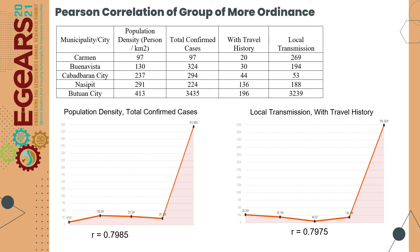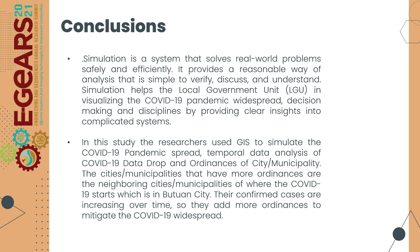Conclusion. Simulation provides a reasonable way of analysis that is simple to verify, discuss, and understand. It helps the local government unit in visualizing the COVID-19 pandemic widespread, decision-making, and disciplines by providing clear insights into complicated systems. In this study, the researchers used GIS to simulate the COVID-19 pandemic spread, temporal data analysis of COVID data drop, and ordinances of municipalities and cities. The cities with more ordinances are the neighboring cities of where COVID-19 started, which is in Butuan. Their confirmed cases were increasing over time, so they added more ordinances to mitigate the COVID-19 pandemic spread.